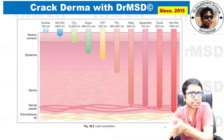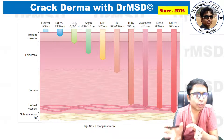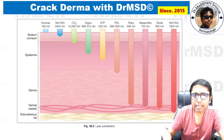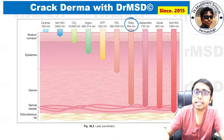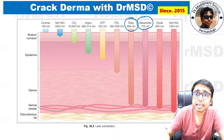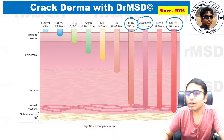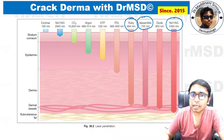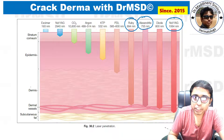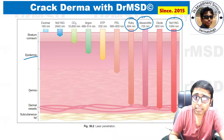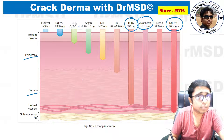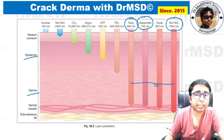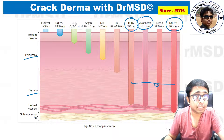Now let us look at lasers and a few of their important indications. On the right-hand side we have Ruby laser, Alexandrite laser, and Diode laser. Just remember that this image depicts the skin and its layers — above the epidermis and below the dermis. These lasers have one thing in common: they are able to penetrate the skin up to the level of the dermis.